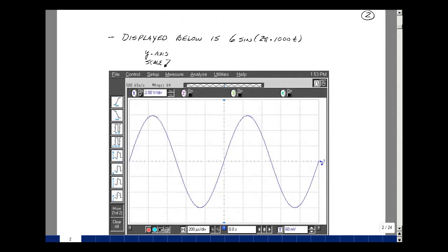Suppose we take our function generator and create a six-volt sine wave at one kilohertz. This is the mathematical representation of that. It's six times the sine of two pi times 1000t.